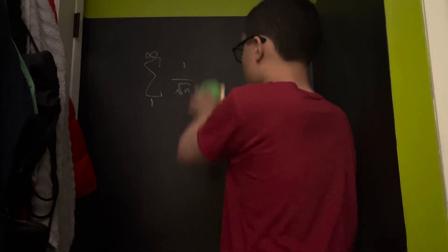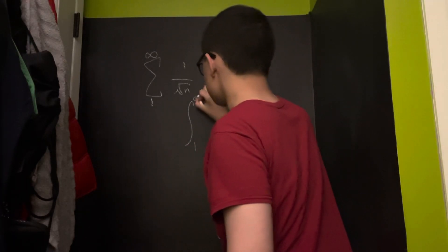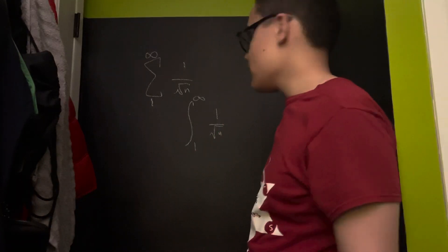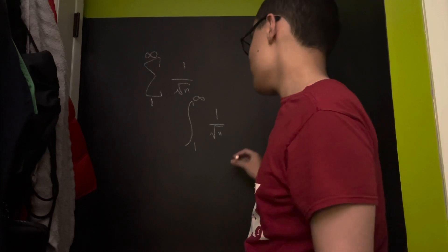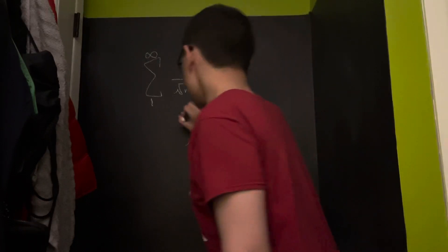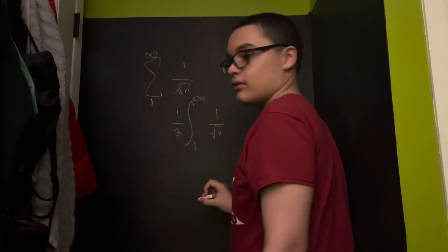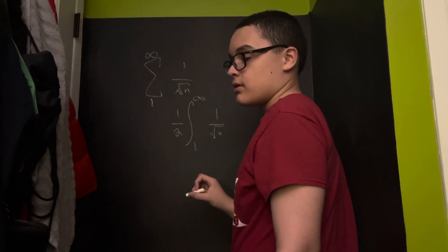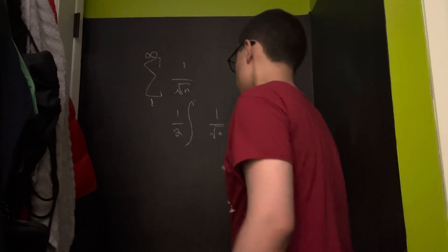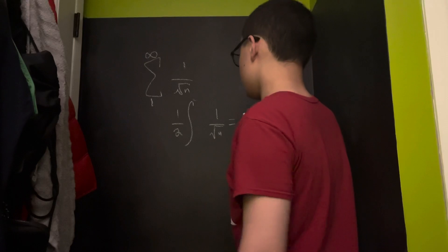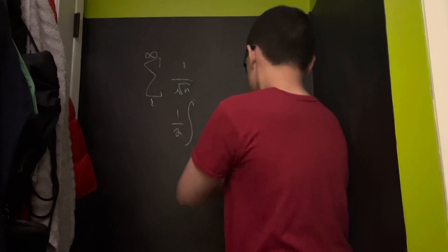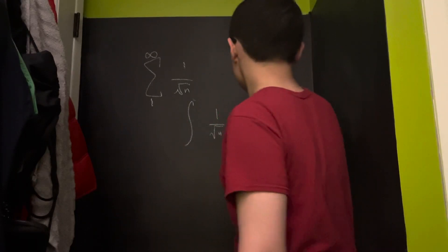Alright, does this diverge? The integral from 1 to infinity of 1 over the square root of n. How do you evaluate this? I'm not quite sure. But I do know that 1 half of this antiderivative — let's take the antiderivative and evaluate it from 1 to infinity. I think 1 half of this antiderivative will actually equal the square root of x. But I'm not gonna care about that. Let's just do u-substitution.